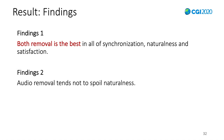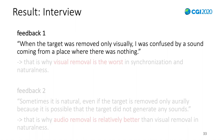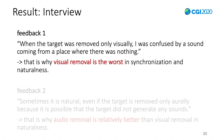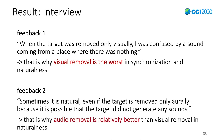From these results, we find that both removal is best across synchronization, naturalness, and satisfaction by average score, and audio removal tends not to spoil naturalness. Participant feedback 1: when the target was removed only visually, participants were confused by sound coming from a place where there was nothing — that is why visual removal is the worst in synchronization and naturalness. Feedback 2: sometimes it is natural even if the target is removed only in audio, because it is possible the target didn't generate any sounds — that is why audio removal is relatively better than visual removal in naturalness.